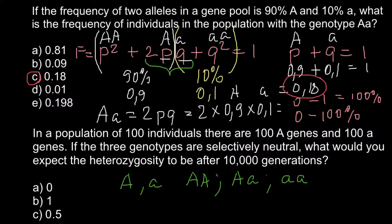Here are the three answer choices: answer A is zero, answer B is one, and answer C is 0.5. You might think the heterozygous genotype would be some kind of intermediate, perhaps 0.5 or 0.33. But actually, the correct answer is A — the expected heterozygosity after 10,000 generations would be zero.